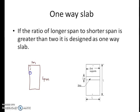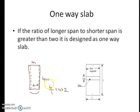This slab is supported on either side by beams along the longer edges — one beam along the longer edge and another along the other side. If it is supported on beams along the longer edges, it will bend along the shorter direction only, and the load is distributed in one direction. The ratio of the longer span (four meters) to the shorter span (one meter) equals four, which is greater than two. When this aspect ratio — longer span to shorter span — is greater than two, it is designed as a one-way slab.